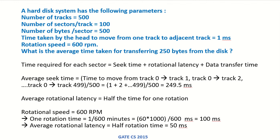A hard disk system has the following parameters: number of tracks 500, number of sectors per track 100, number of bytes per sector 500, time taken by the head to move from one track to adjacent track 1 millisecond, rotation speed 600 RPM. What is the average time taken for transferring 250 bytes from the disk?